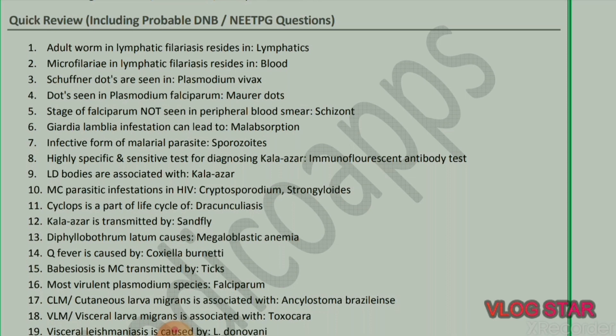Now the quick review includes DNB and NTpg questions. Adult worm in lymphatic filariasis resides in lymphatics; microfilariae reside in blood. Schüffner's dots are seen in Plasmodium vivax; Maurer's dots are seen in Plasmodium falciparum. The stage of falciparum not seen in peripheral blood smear is schizont. Giardia lamblia infestation can lead to malabsorption.